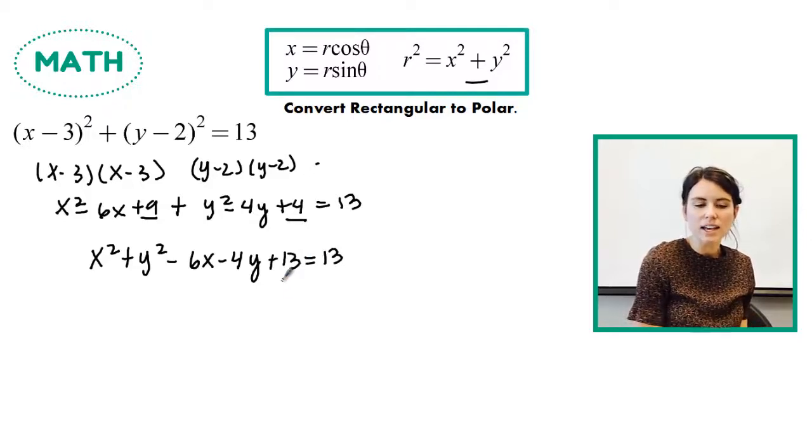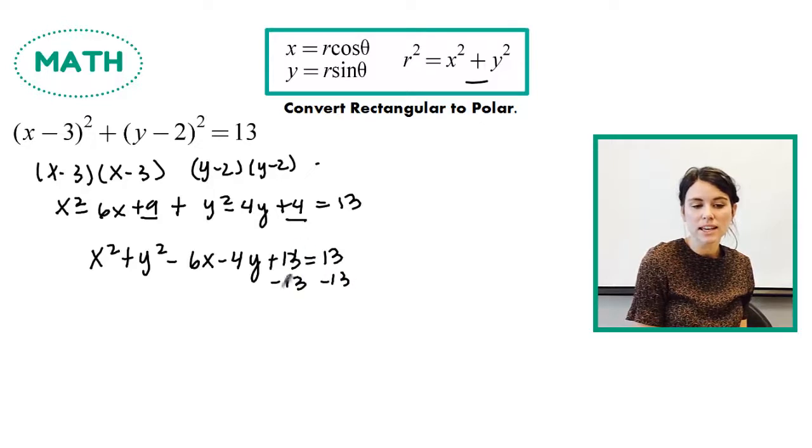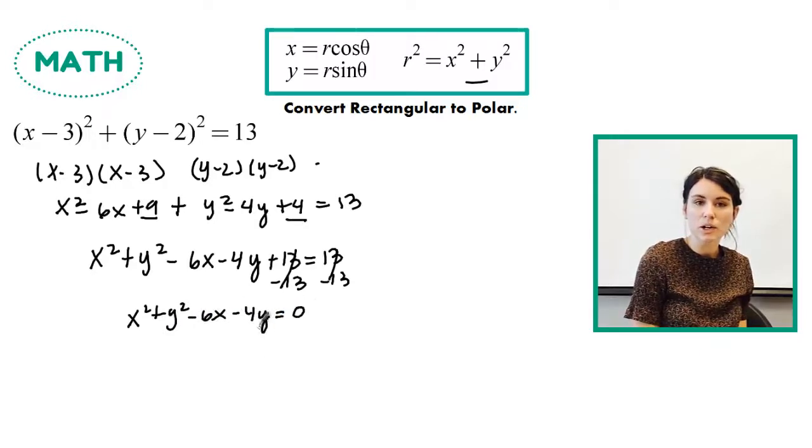Then again, since I have x's and y's over here, I'm going to try and move all my numbers to one side just to see if that can help me out. Which it does because that cancels. So I have x squared plus y squared minus 6x minus 4y equals 0.